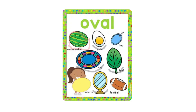You can see yourself in the mirror. And what's the shape of the mirror? It is oval. Look at this — this is a football, and the shape of the football is oval. Look at the girl — she is holding an oval shape. All of these pictures have the oval shape.